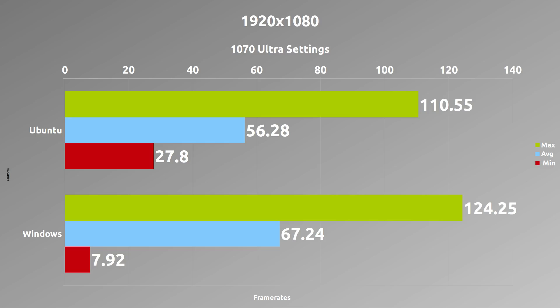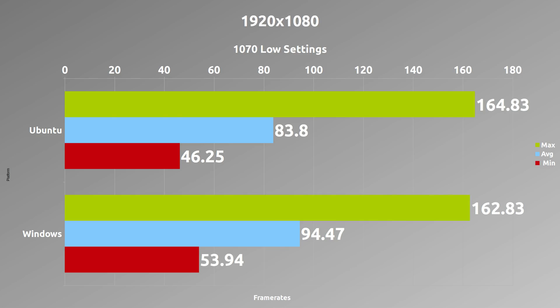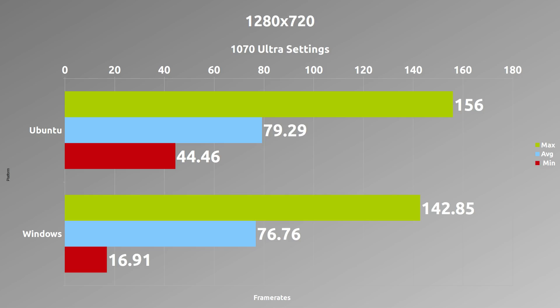So as we saw just now, we're definitely losing slightly more frames on Ubuntu than Windows on average. But as we see here from the outcome at the final part of the benchmark, we actually retain a higher minimum. You can also see this on Gaming on Linux's website with their benchmarks. This means when it drops, it doesn't drop as badly as it does on Windows.